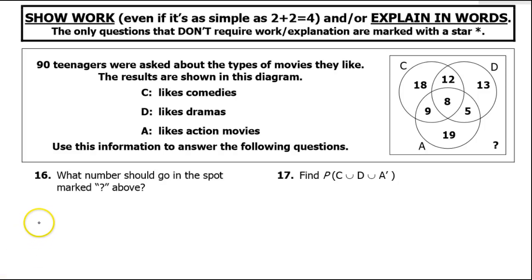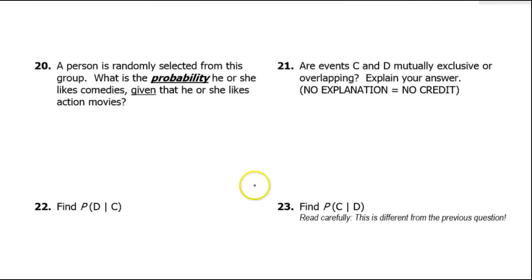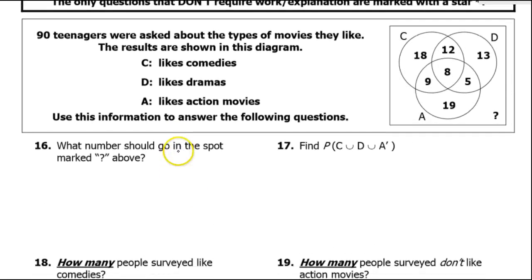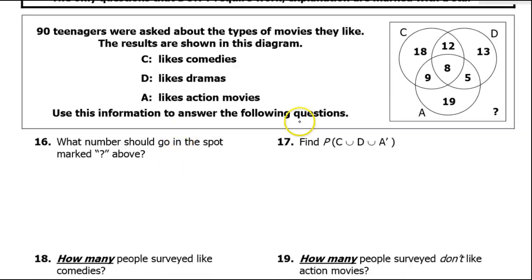In this video, we will talk about basic probability, both regular probability where we just do target over total, and conditional probability when you are talking about the probability of something given that some other information is already known. All of this will be done in the context of set theory and set notation, unions, intersections, complements, that type of thing.